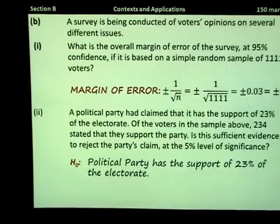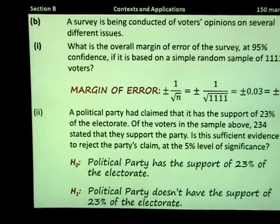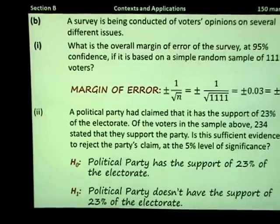The alternative hypothesis, which we denote by H1, would be that the political party doesn't have the support of 23% of the electorate. To calculate a hypothesis test, we have to calculate a confidence interval. The confidence interval is based on the margin of error and on the sample proportion. Here, we had 234 voters out of a total of 1,111. We're going to calculate our sample proportion, which is denoted by P-hat. P-hat here would be 234 over 1,111, and this corresponds to 21%. So from our sample, 21% of the voters support this party.